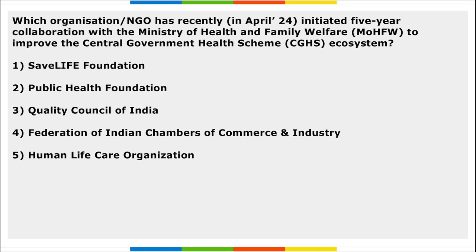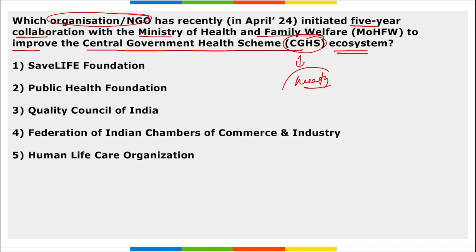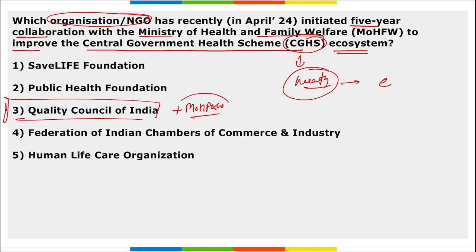Next: which organization has recently initiated a five-year collaboration with the Ministry of Health and Family Welfare to improve the CGHS ecosystem? CGHS is a scheme that provides health services to central government employees. It is the Quality Council of India (QCI). QCI has partnered with the Ministry of Health and Family Welfare to improve the ecosystem of the CGHS scheme. This collaboration will be for five years.